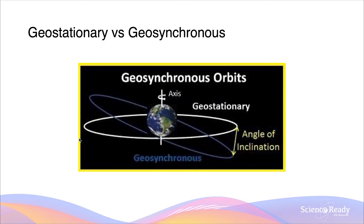I want to briefly discuss geosynchronous orbits versus geostationary orbits, as this is a common source of confusion. Geostationary orbits are specifically above the equator of the Earth, move in the easterly direction, maintain a 24-hour period, and remain stationary relative to a point on the surface. In contrast, geosynchronous orbits have roughly the same altitude above Earth's surface, but do not remain above the equator at all times. As you can see in blue, the geosynchronous orbit traverses across different latitudes and longitudes, and as a result does not remain stationary above Earth's surface.